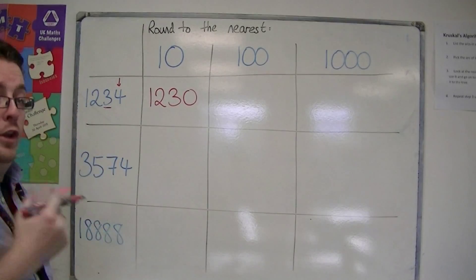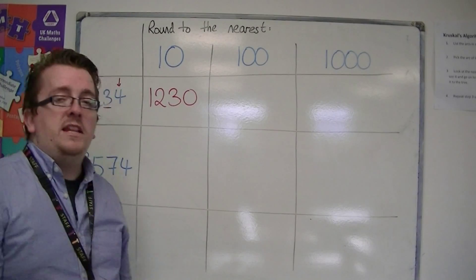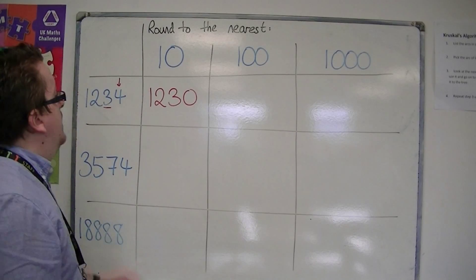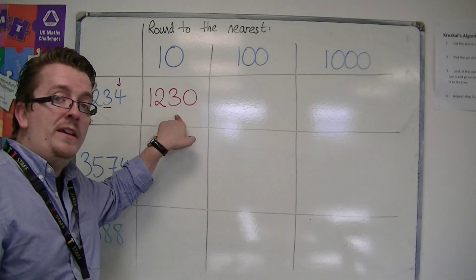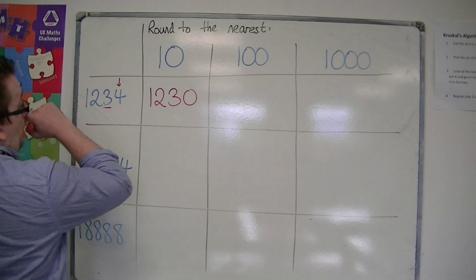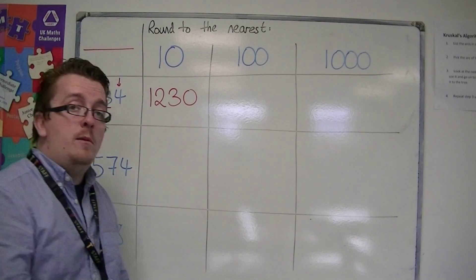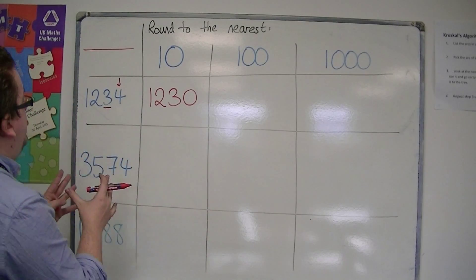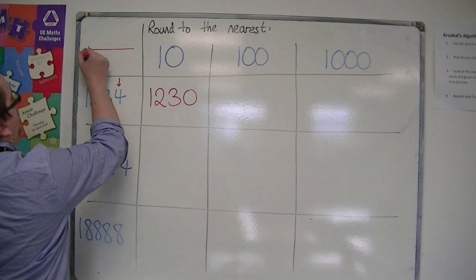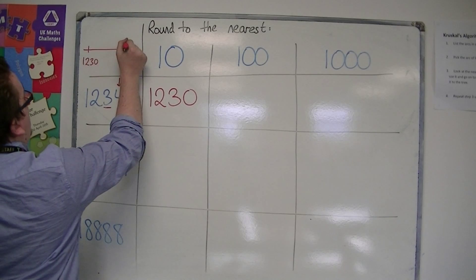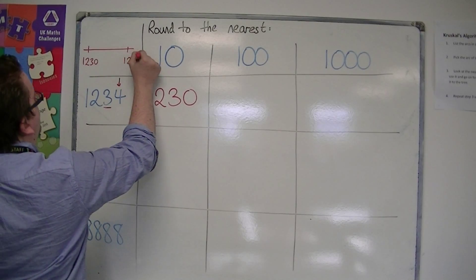Okay, in a lot of cases people make the mistake in rounding down to make this 1,220. And the reason why it's not is because I've split up my number line, as I did in the previous video, into tens. So I've got 1,230 and 1,240.